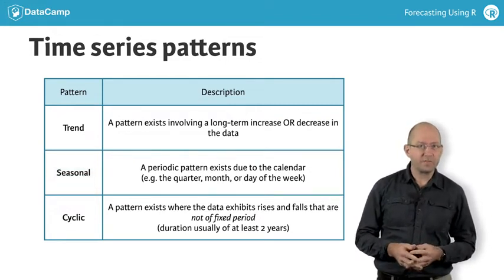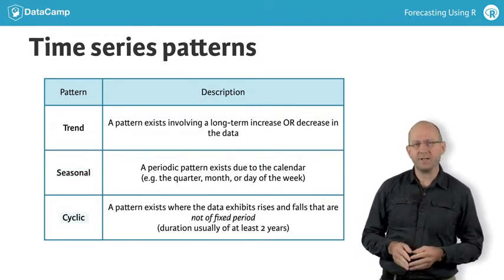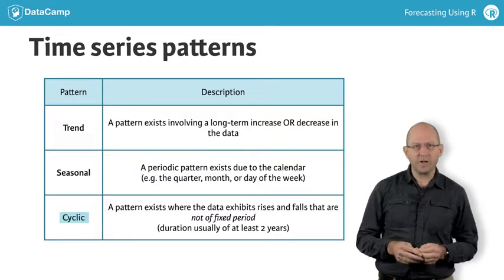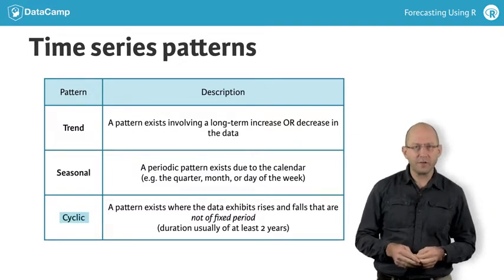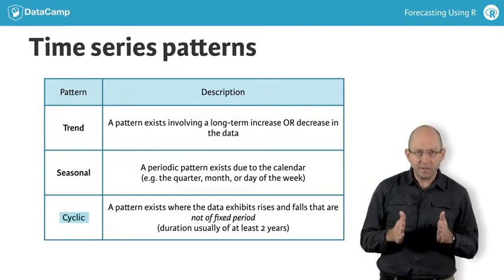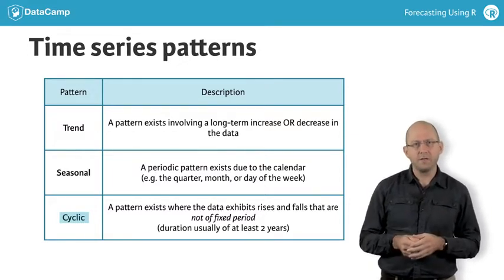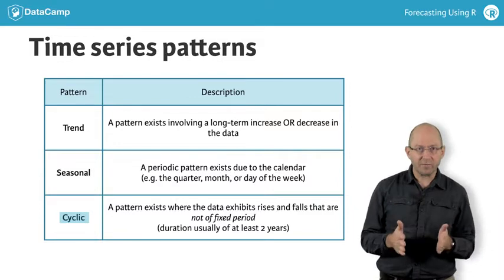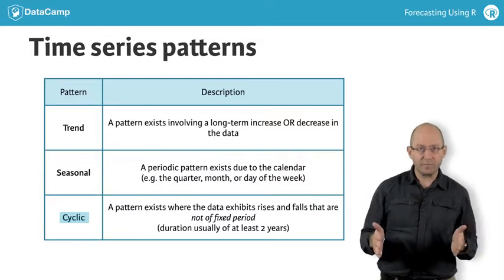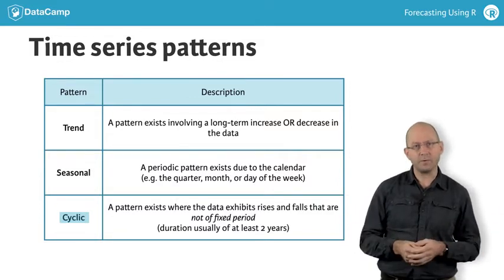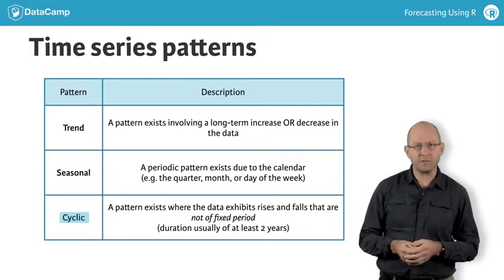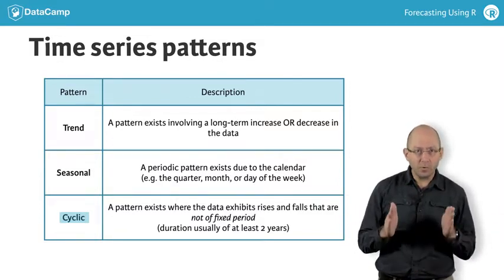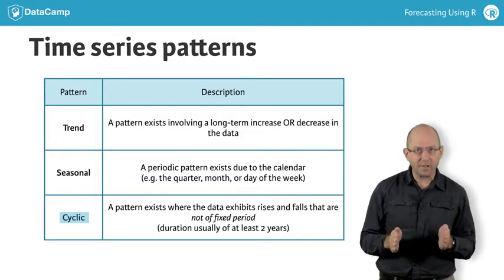This should be distinguished from cyclic patterns. They occur when there are rises and falls that are not of a fixed period. For example, a business cycle might last three, five, or eight years between peaks or troughs. But a seasonal pattern is always of the same length.